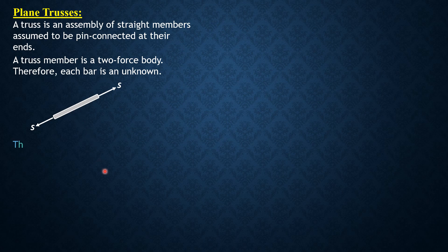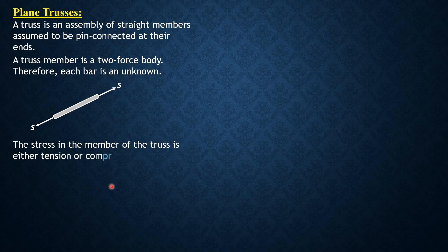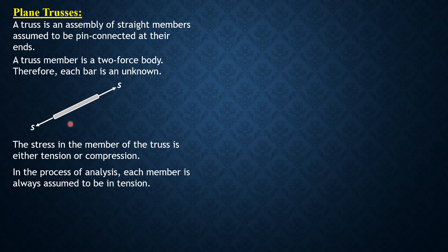The stress in the member of the truss is either tension or compression. In the process of analysis, each member is always assumed to be in tension, and then negative sign of the force corresponds to compression.